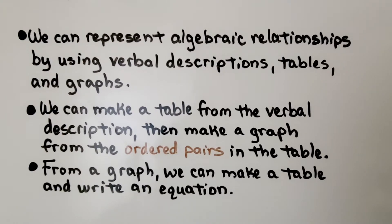We can make a table from the verbal description, then make a graph from the ordered pairs in the table. From a graph, we can make a table and write an equation.